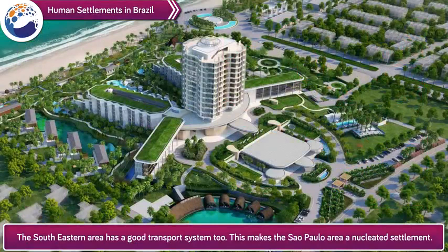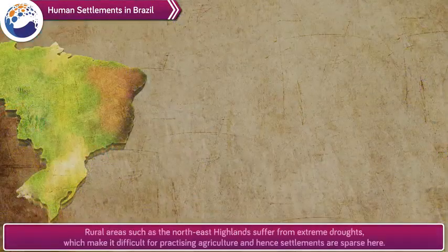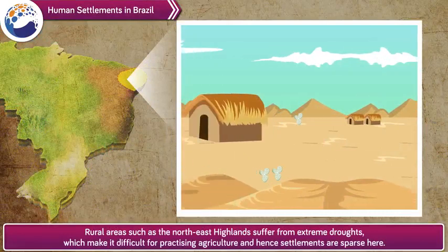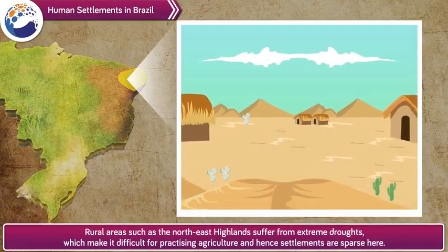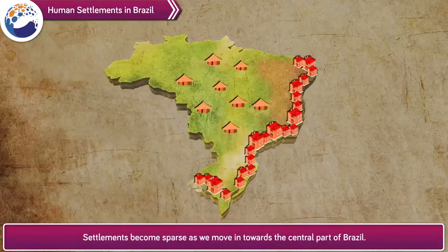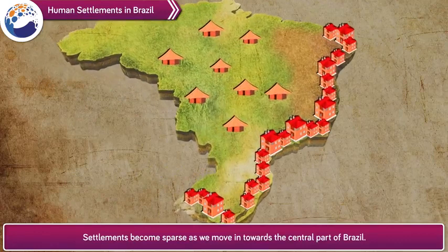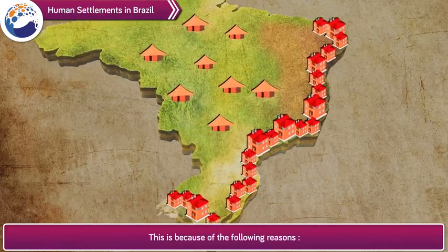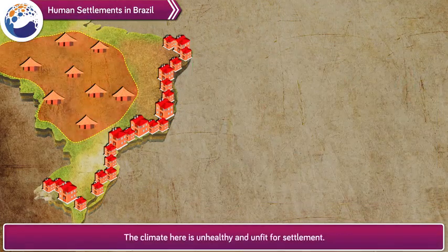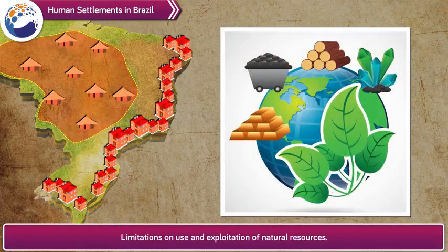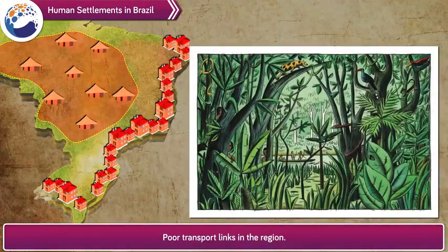This makes the São Paulo area a nucleated settlement. Rural areas such as the northeast highlands make it difficult for practicing agriculture, and hence settlements are sparse there. Settlements become sparse as we move towards the central part of Brazil because: the area is covered by thick, dense equatorial rainforests; the climate is unhealthy and unfit for settlement; there are limitations on use and exploitation of natural resources; and there are poor transport links in the region.